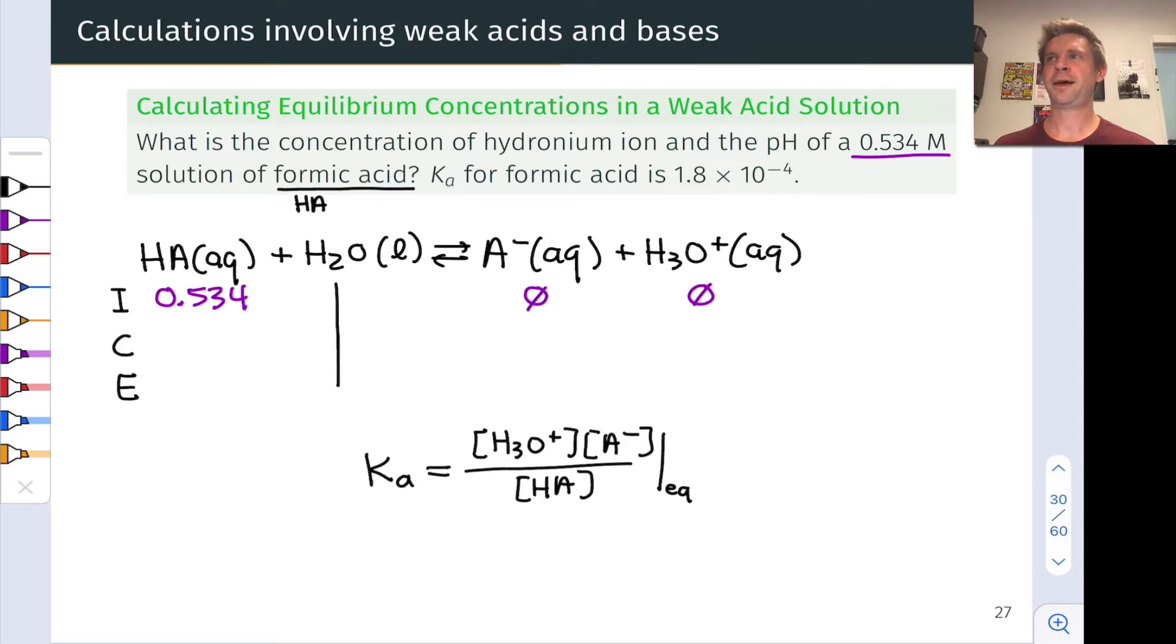Think for a moment about Q versus K. The initial Q here equals 0, so the reaction will certainly go forward. This allows us to write the change line of the ICE table with minus X on the reactant side and plus X on the product side. Then for the equilibrium line, we simply put initial and change together.